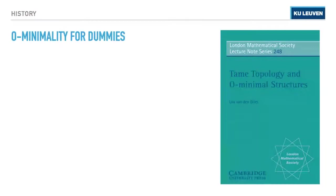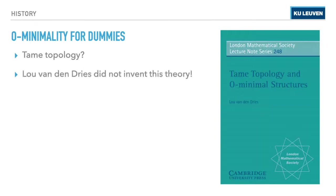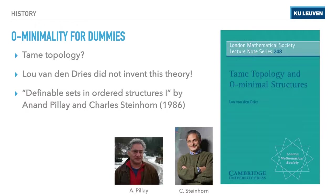The standard reference in our field is this book called 'Tame Topology and O-minimal Structures' by Professor Lou van den Dries, a Dutch mathematician — you could call it the book 'O-minimality for Dummies.' Even though Professor van den Dries is very influential and this book is important, he did not invent this theory but has contributed a lot to it. Who actually introduced the field or discovered O-minimal structures?